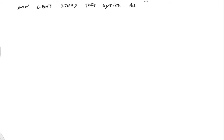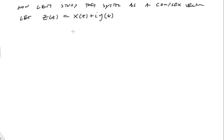Now let's study this system as a complex vector. Let z(t) = x(t) + i·y(t). Just like before, we have x' = ω₀·y and y' = -ω₀·x. Let's see if we can put this together into a different way to describe the same mass-spring system.